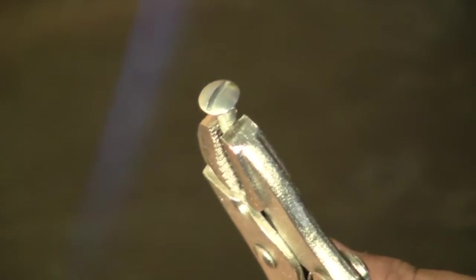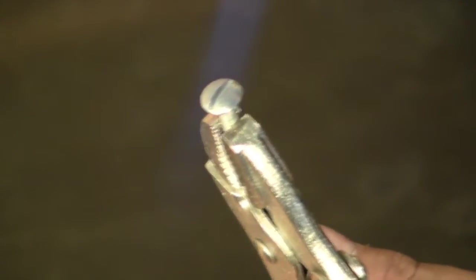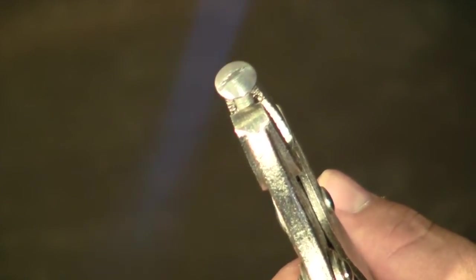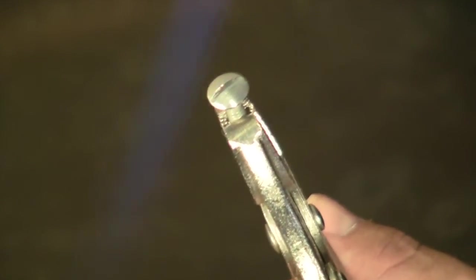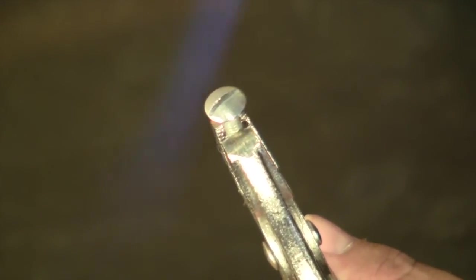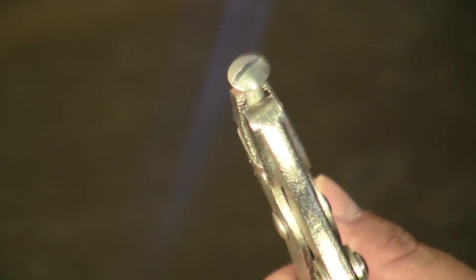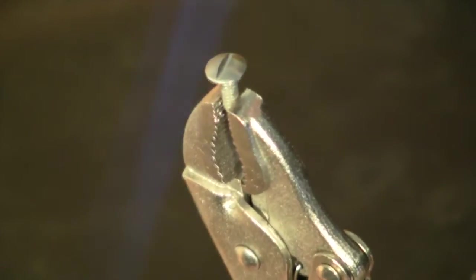It'll start with a soft straw color getting darker. As it goes through the browns, it'll come up into a purple and then blue color. And we want to take this very slowly because it will go through these colors very fast.